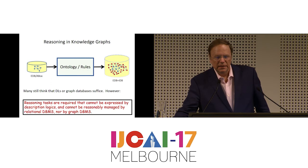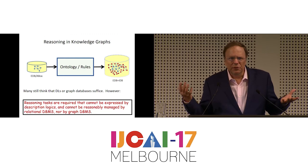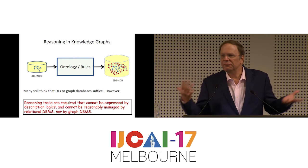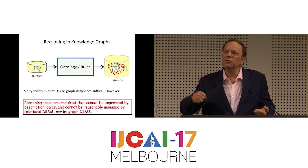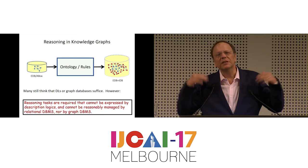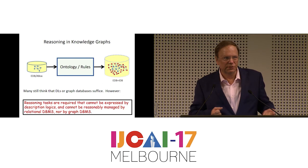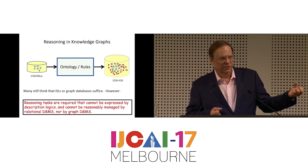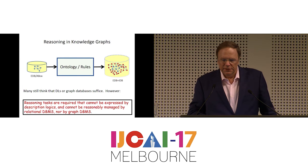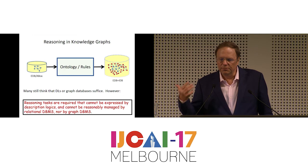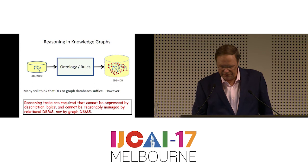Many people and companies think that if they want a knowledge graph, they just need a graph database because the word 'graph' appears in it. Graph databases are pretty good for storing and retrieving information, and some advanced graph databases do a little ontological reasoning, but what we term reasoning is far beyond that — not really sufficient. So graph databases are not knowledge graph management systems. Reasoning tasks are required that cannot be expressed by description logics and cannot be reasonably managed by relational or graph database management systems.